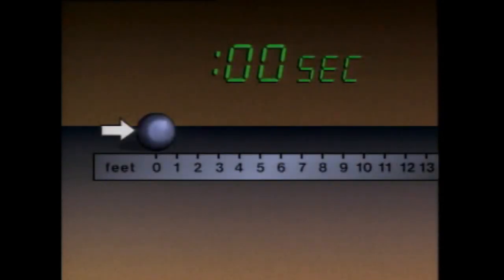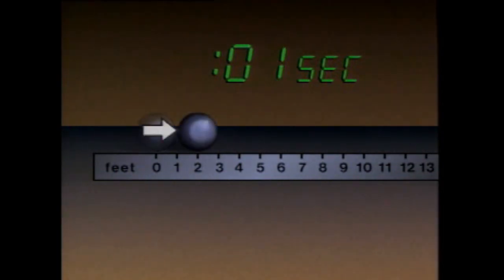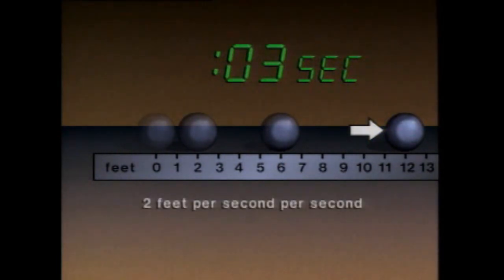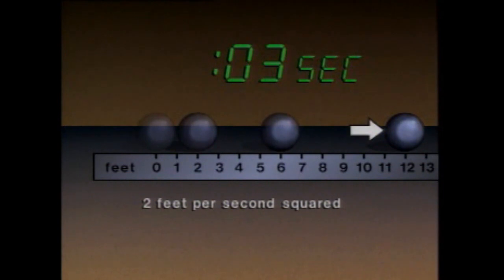For example, as a result of an applied force, this ball accelerates from zero velocity to its peak velocity. Let's look at the action again using a scale to show distance and a clock to show time. If the ball moves two feet in the first second, four feet in the second, and six feet in the third, it travels an additional two feet for every second that passes. In other words, it accelerates at a rate of two feet per second per second.